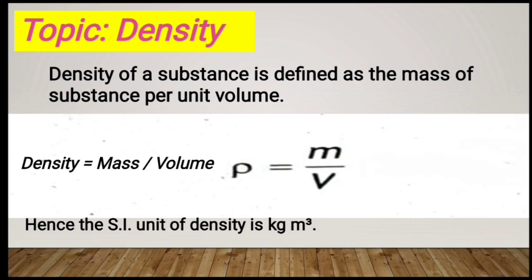Density is equal to mass divided by volume. Density is denoted by the Greek letter rho (ρ), and the formula is: mass of the object divided by volume of the object.